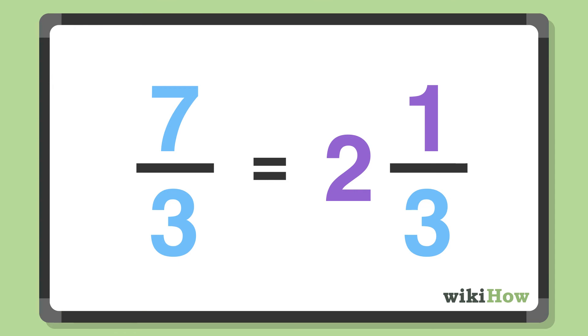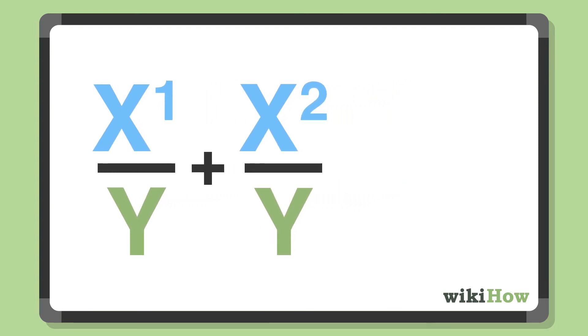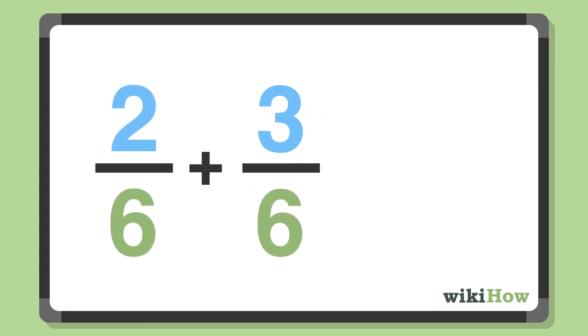You can add and subtract fractions like whole numbers, but only if they share the same denominator. For instance, two-sixths plus three-sixths equals five-sixths.